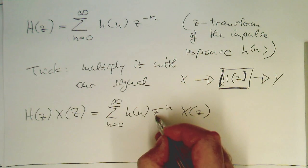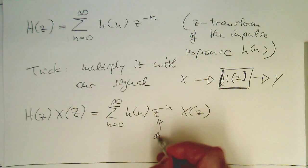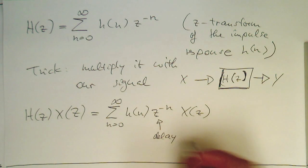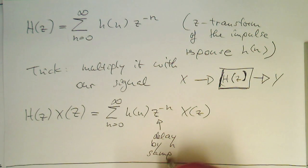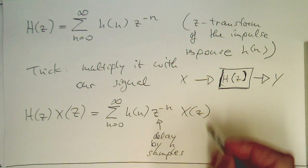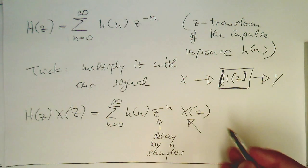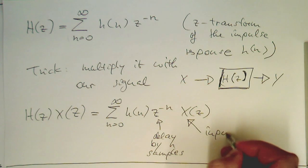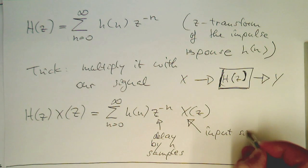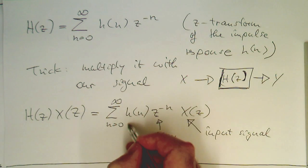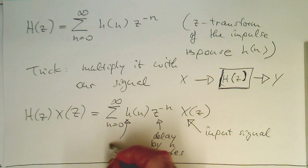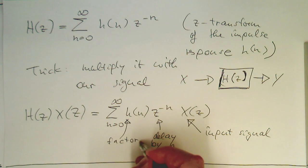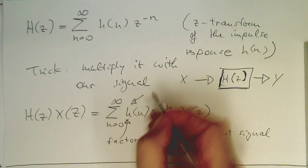So now we just need to analyze this term here. Z to minus n is a delay by n samples. This is our input signal, and this here is essentially just a factor, or factors in this case, because it depends on n. These H(n) are our impulse response of the filter.